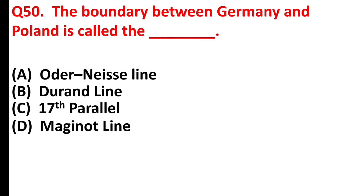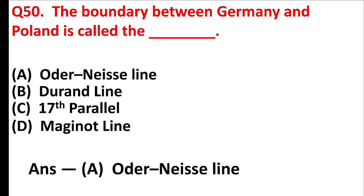The boundary between Germany and Poland is called the blank — Answer is Option A: Oder-Neisse Line.